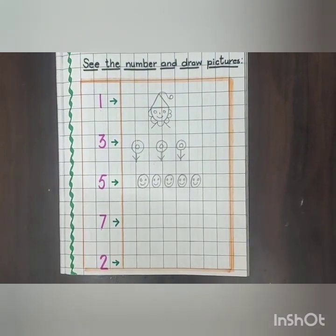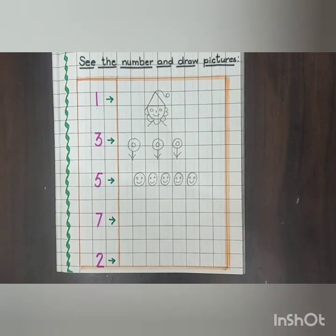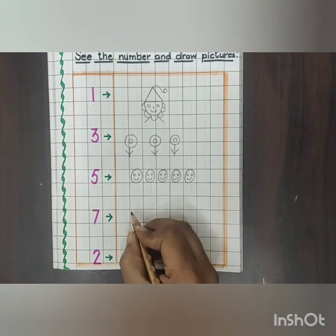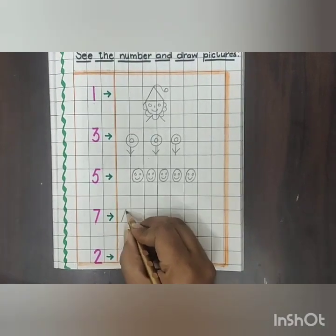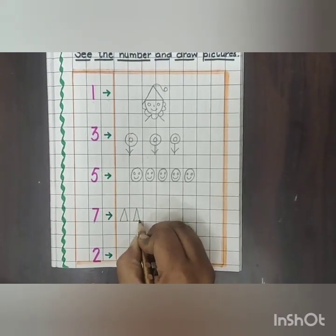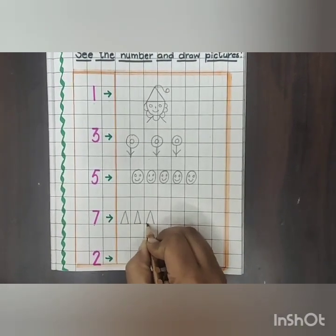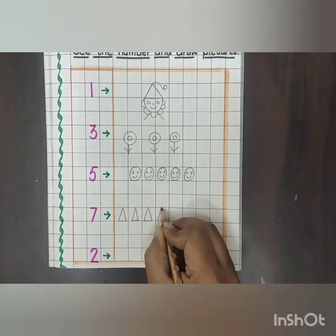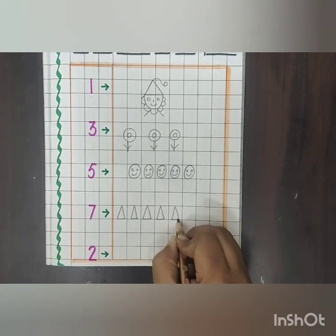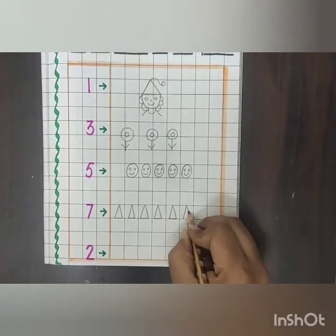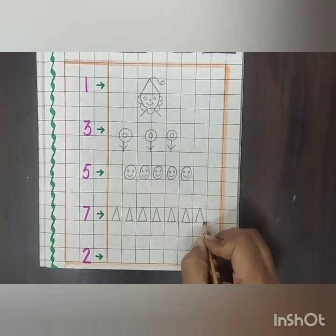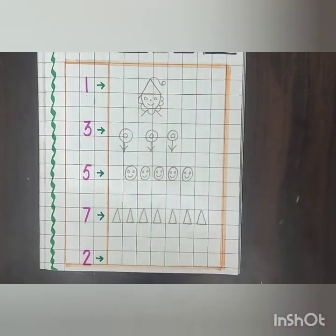I will draw seven triangles: one, two, three, four, five, six, and seven. Wow, it's looking very beautiful!